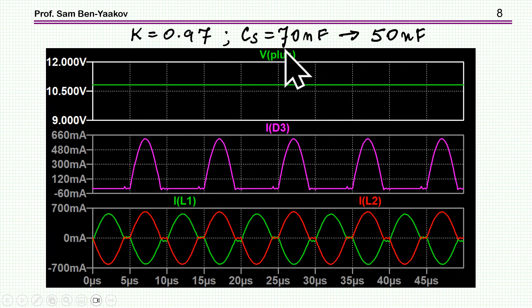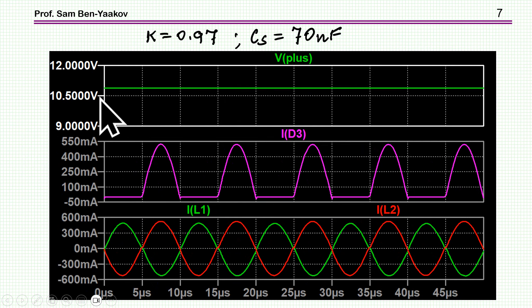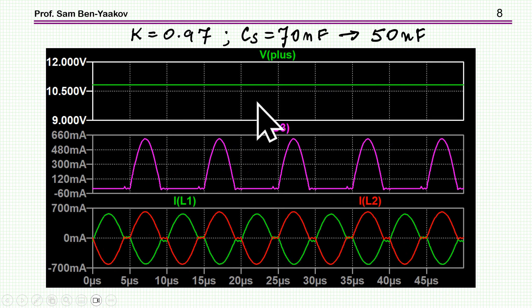If I change the capacitor from 70 to 50 nanofarad, performance is just about the same, except I have a void here. Nothing is really happening. But if I look at the output, and here is the output with the original capacitor, the difference is very small. Really changing the capacitor, making it smaller, doesn't matter that much. We'll see it a little bit later.